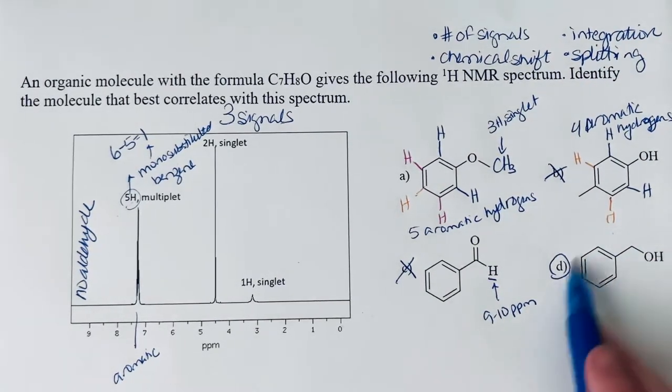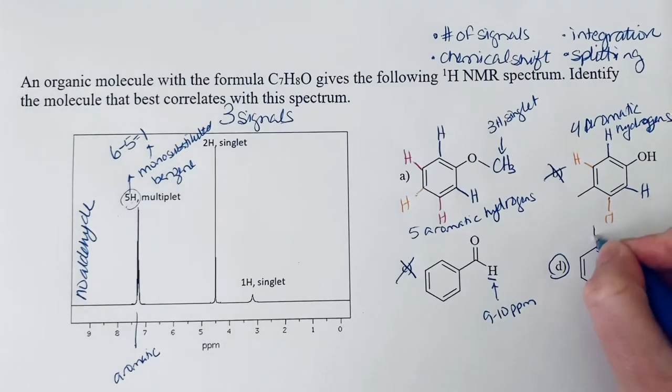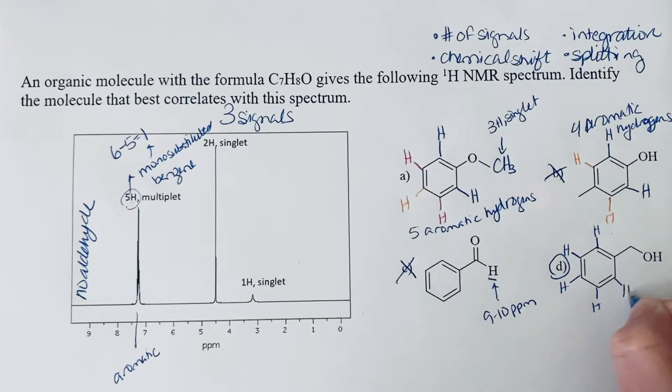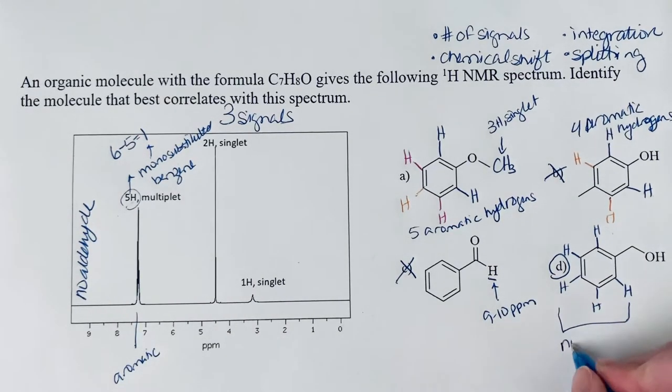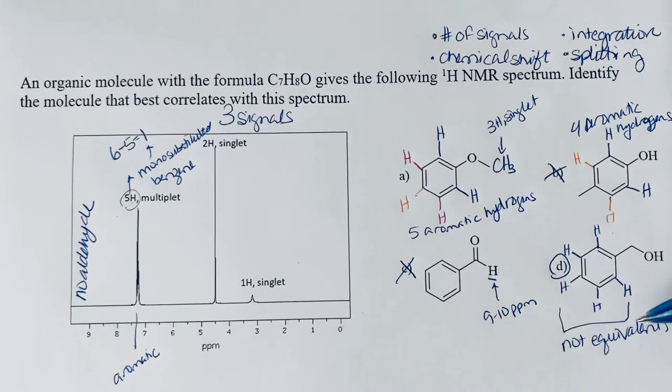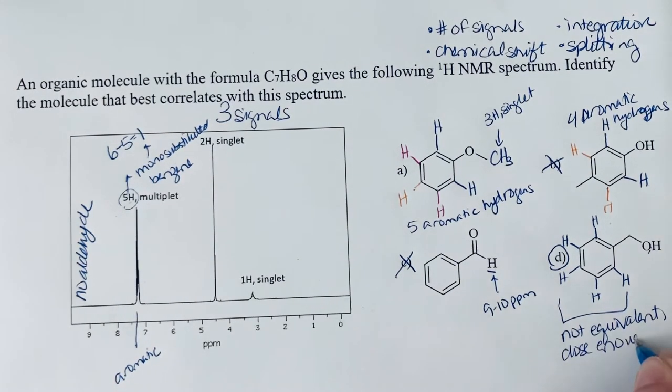Let's just make sure we can interpret all the pieces and assign these signals to this structure. So the five hydrogen multiplet, that's all of these aromatic ring hydrogens. And so they're not equivalent. But you don't have anything strongly electron withdrawing or electron donating directly attached to the ring. Of course, you've got this oxygen out here. But it's separated from the ring by that CH2 group. So close enough that the signals overlap is what we're seeing here.